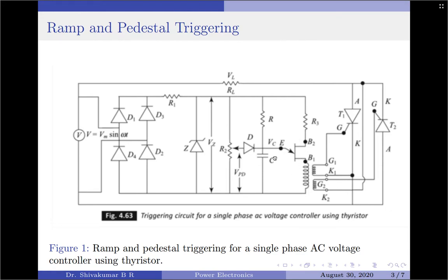During the charging of capacitor C, since the capacitor voltage Vc is greater than Vpd, diode D is off as it will be reverse biased. The capacitor charges through resistor R, and the rate of capacitor charging depends upon the value of Vpd. Whenever the capacitor voltage Vc reaches the threshold voltage of the UJT, which is η·Vz, the UJT is turned on and current flows through the primary of the pulse transformer. A triggering pulse is then obtained from the secondary of the pulse transformer, and thyristors T1 and T2 will be triggered.